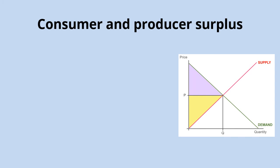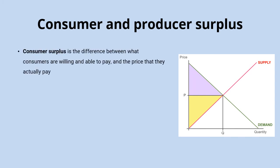Starting with consumer surplus, which is the difference between what consumers are willing and able to pay and the price that they actually pay. In order to explain that fully we need to go back to our most basic supply and demand diagram, remembering that the market demand curve is showing the summation of the demand of all of the individuals in that particular market.